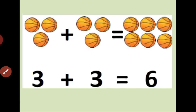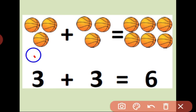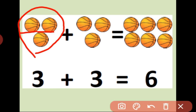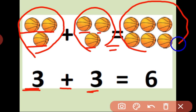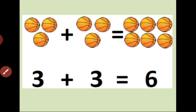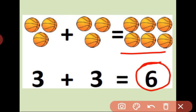Next, for example. How many balls here? 1, 2, 3. 3 balls. How many balls here? 1, 2, 3. 3. Three plus three is equal. Count: 1, 2, 3, 4, 5, 6. Answer is six. 3 plus 3 is equal 6.